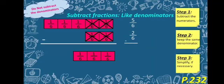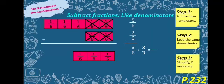Step 1 is to subtract the numerators. The numerators are 5 and 2, so 5 minus 2 equals 3. Step 2 is keep the same denominator — we do not subtract the denominators, we just keep it, so the common denominator here is 6. Step 3 is simplify if necessary. 3 and 6 both can be divided by 3: 3 divided by 3 equals 1, and 6 divided by 3 equals 2. So the answer is 1 over 2.